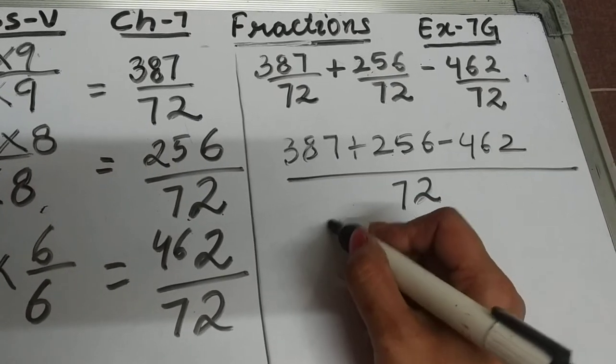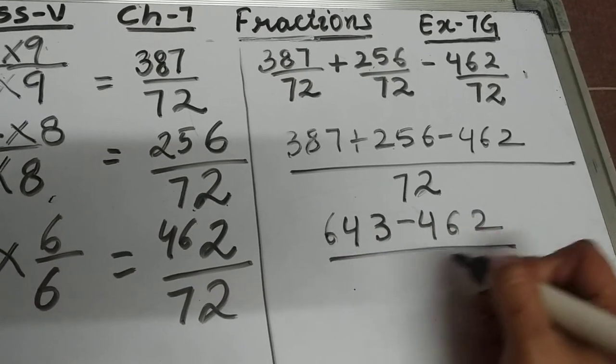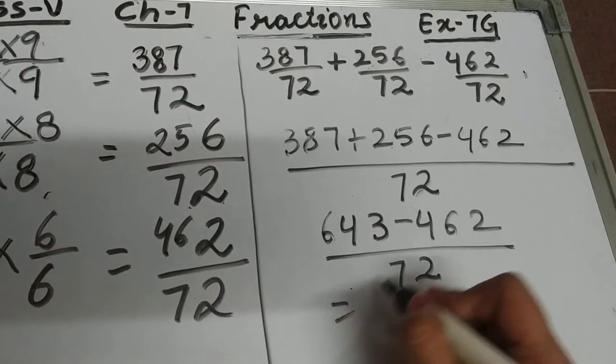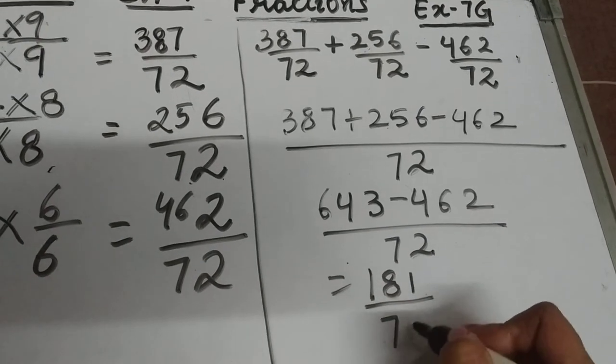After adding you will get 643 - 462, over 72. Now subtract 462 from 643. This will be 181/72.